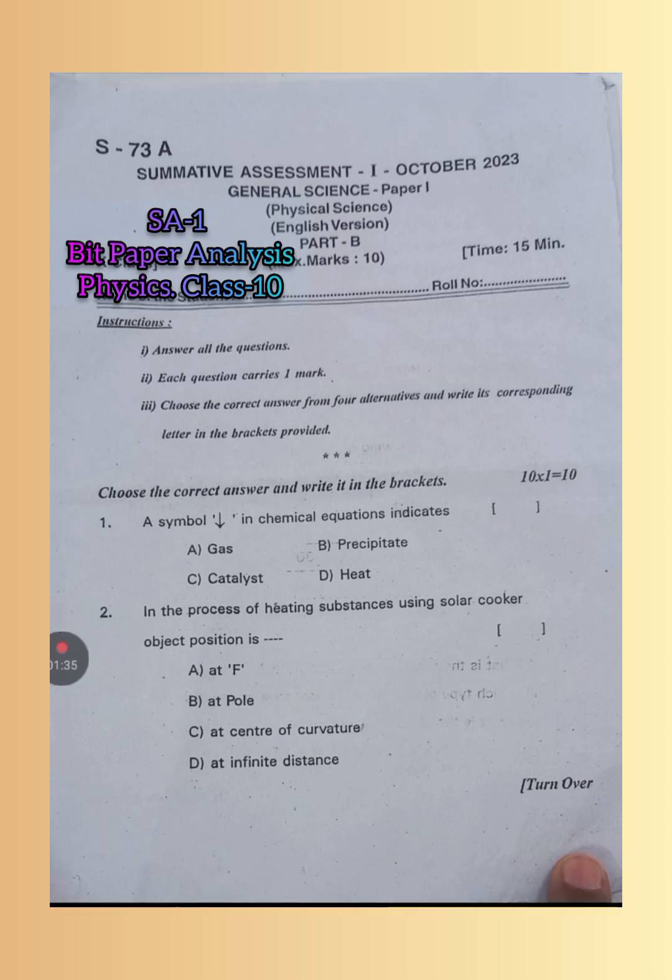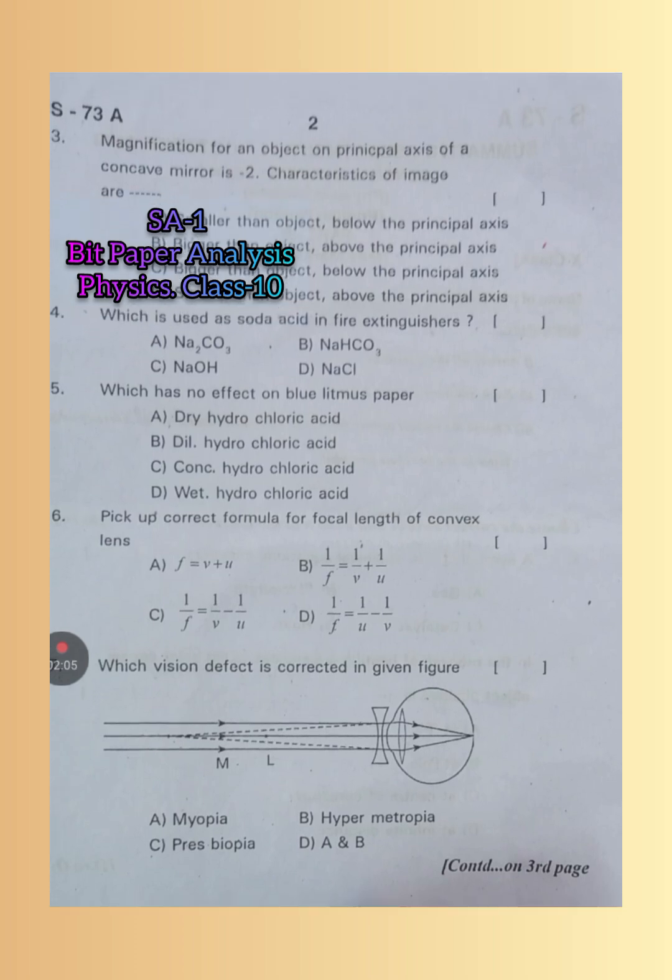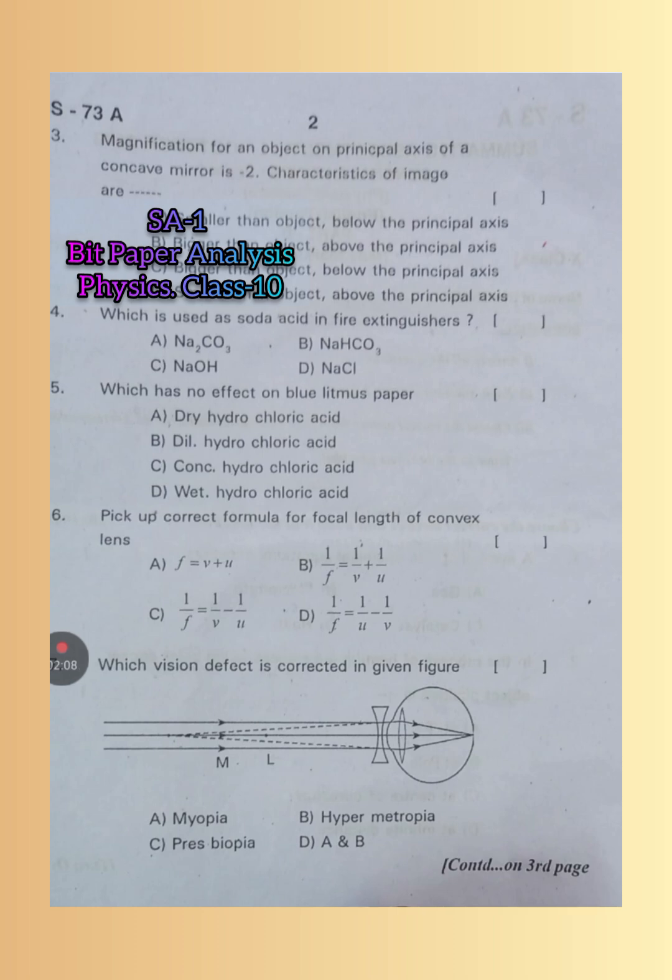Next, come to the third one. Magnification for an object on principal axis of a concave mirror is minus 2. Characteristics of image are - so C is the right answer. Bigger than object, below the principal axis.